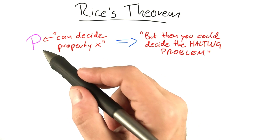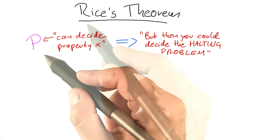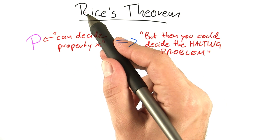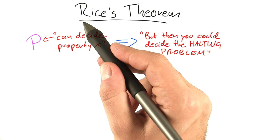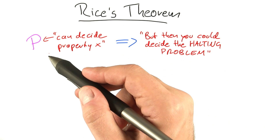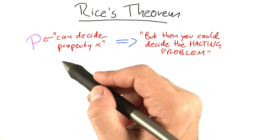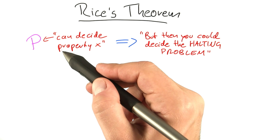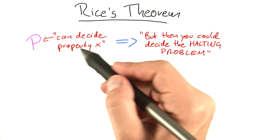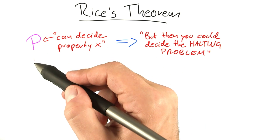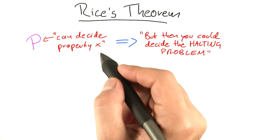And it turns out that that is exactly true. In 1953, Henry Rice, after whom Rice's theorem is named, proved that basically you cannot use an algorithm to decide anything about the properties of a given program.